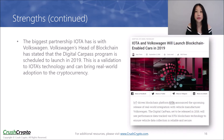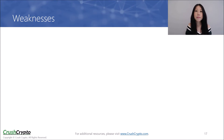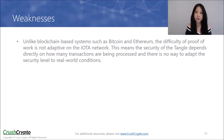The biggest partnership IOTA has currently is with Volkswagen. Volkswagen's head of blockchain has stated that the Digital CarPass program is currently scheduled to launch in 2019. This is validation of IOTA's technology and can bring real-world adoption to the cryptocurrency. IOTA's crowdsale raised a reasonable amount of money at approximately $500,000, which is significantly less than the amount that many other recent ICOs have been raising or trying to raise. They did not have a large pre-sale bonus and did not allocate any tokens for the team. The crowdsale was performed in a fair manner that incentivized community building over profits. However, unlike blockchain-based systems such as Bitcoin and Ethereum, the difficulty of proof-of-work is not adaptive on the IOTA network, meaning security of the Tangle depends directly on how many transactions are being processed.